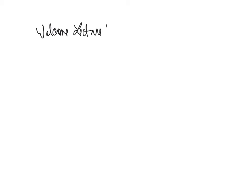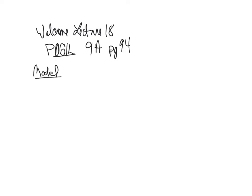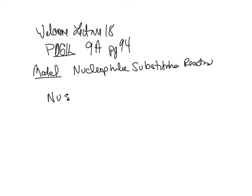Welcome to Lecture 18. We're going to work POGIL Activity 9A, which is page 94 in your POGIL book. I'll let you go ahead and answer the questions on this page as I bring up Model 1. Model 1 is nucleophilic substitution reactions — we have a nucleophile and we have an electrophile.